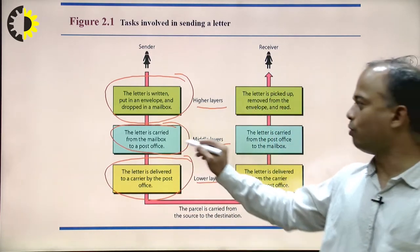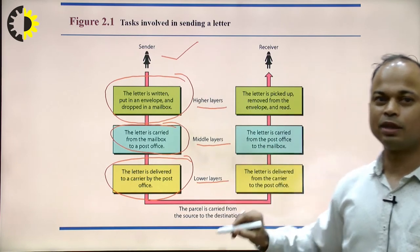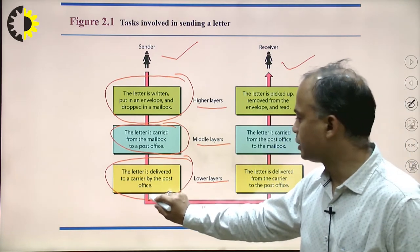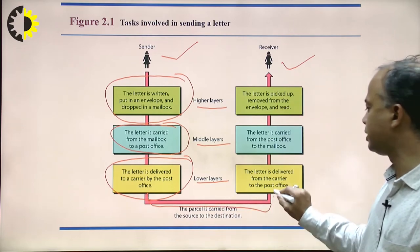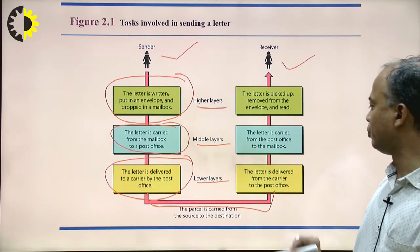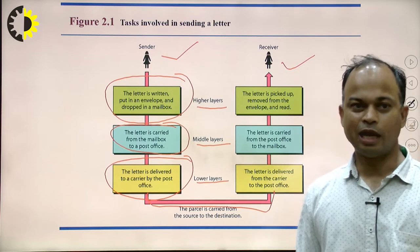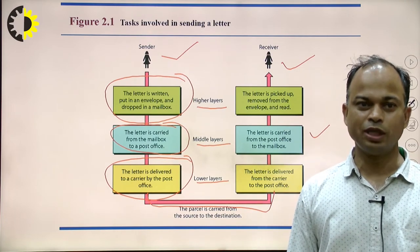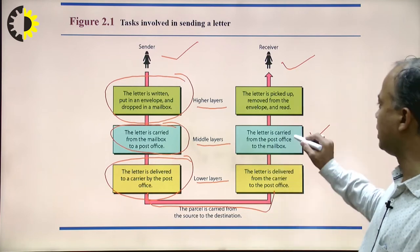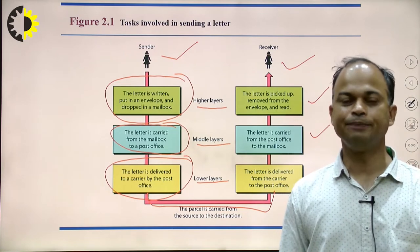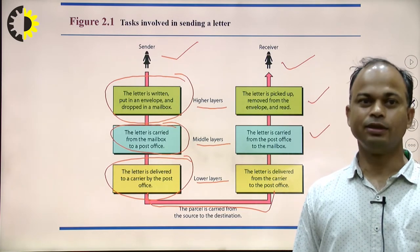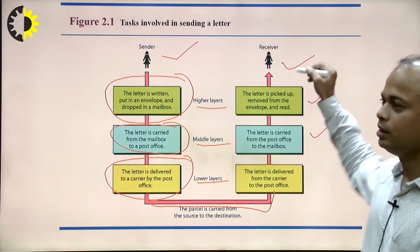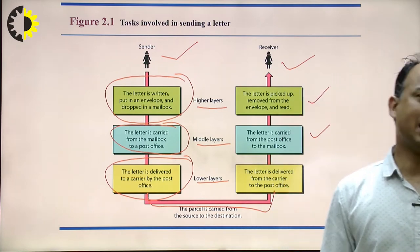These tasks are performed at the sender side and all similar kinds of tasks are performed at the receiver side. At the receiver, the message comes from the lower layer: the letter is delivered from carrier to post office, then transmitted to the middle layer where the letter is carried from the post office to the mailbox. Finally, data is forwarded to the upper layer at the receiver side, where the letter is picked up, removed from the envelope. Same jobs are performed in the reference model.